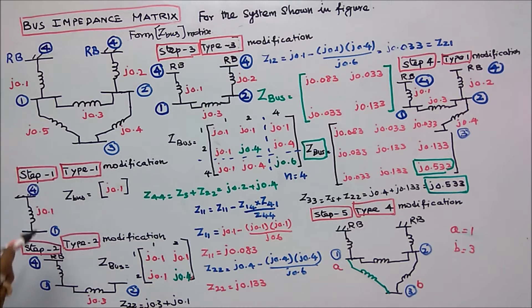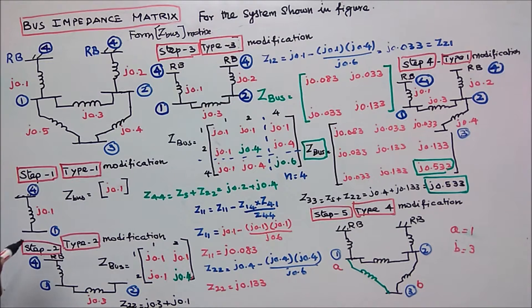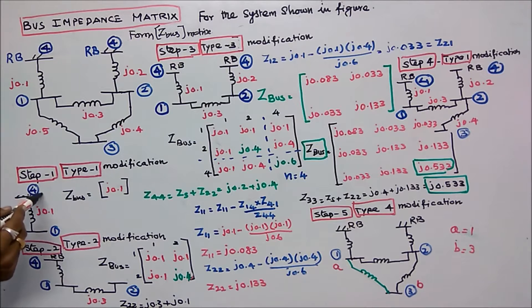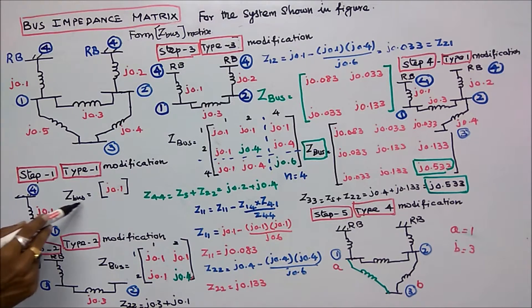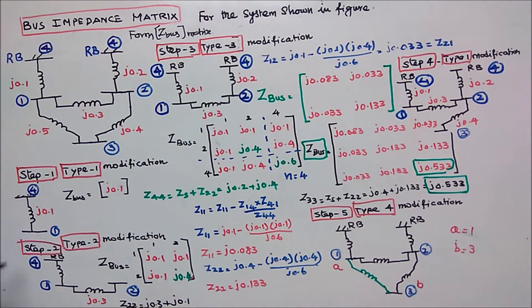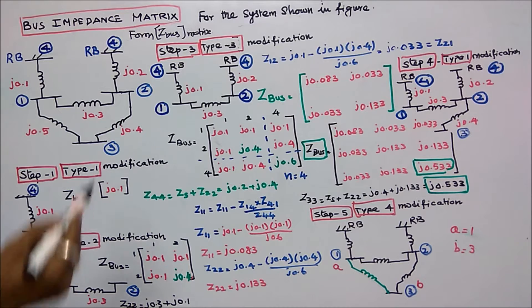Step one is a type one modification. I am connecting bus one to the reference bus four. Now I got a one by one matrix: Z-bus is equal to j0.1.